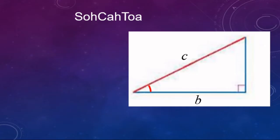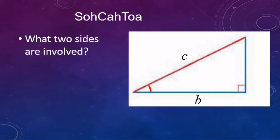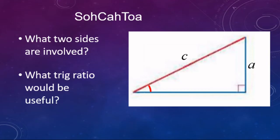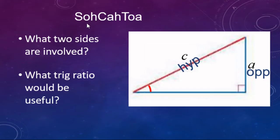What two sides are being involved? Side B is the leg that is touching the angle, so it's the adjacent. And C is the hypotenuse - the longest side, the side not touching the 90 degree. So we got adjacent and hypotenuse. What trig ratio would be useful? We got the A and the H, and A and H goes with the C for cosine. Cosine of the angle is adjacent over hypotenuse. Switching these around: across from the angle is the opposite leg, and C is still the hypotenuse. We got the O and the H, which goes with sine. Sine of the angle, opposite over hypotenuse.